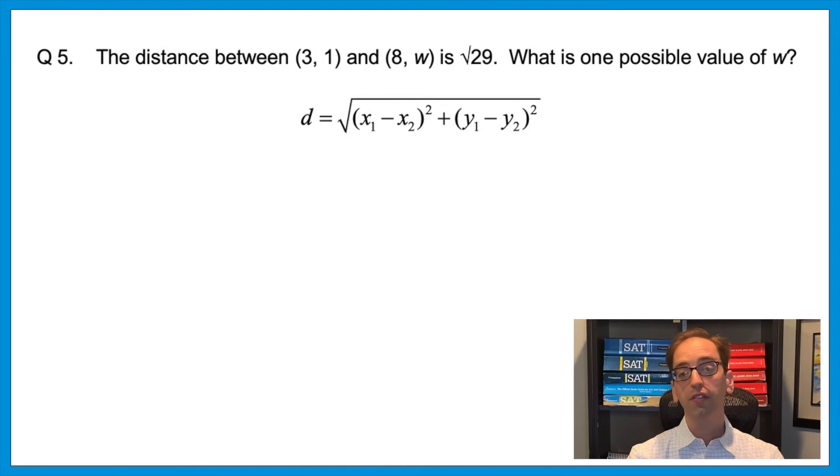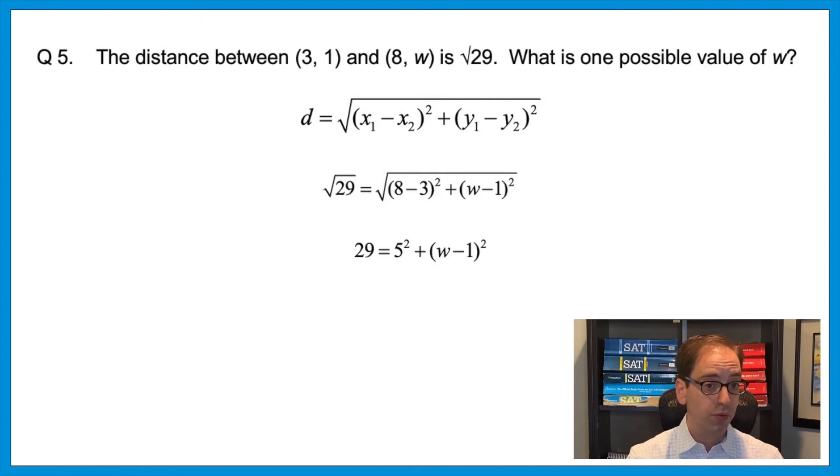So using the information they give us, we can plug in radical 29 equals, all under the radical, 8 minus 3 squared plus w minus 1 squared. From there, we could get rid of the radical by squaring both sides. That would now give us 29 equals 5 squared plus w minus 1 squared. That 5 squared is 25. So moving that over would now give us 4 equals w minus 1 squared.